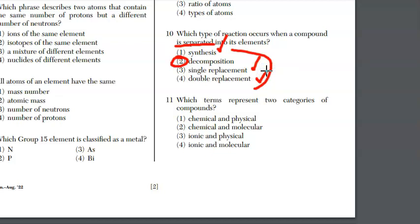For question 11, which terms represent two categories of compounds? We're going to have either ionic, because there's ionic bonds. The other kind of bond is covalent, and with covalent, those are molecular compounds or molecules. Our answer is choice four.